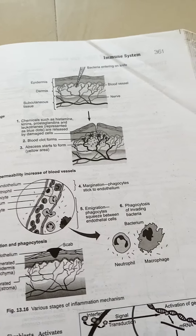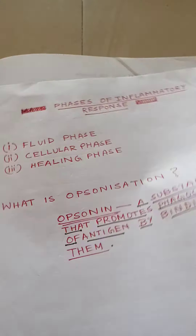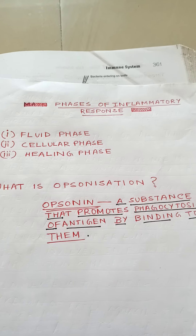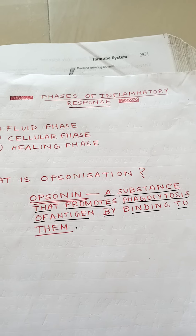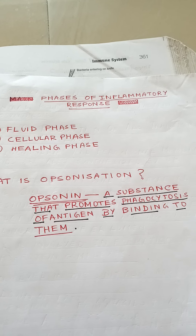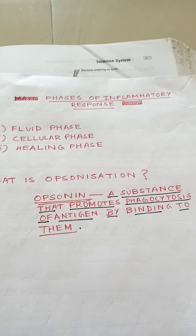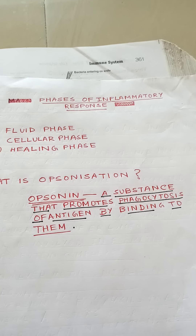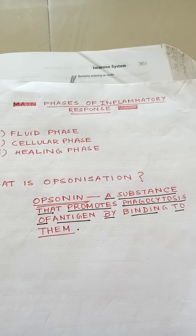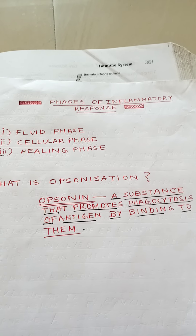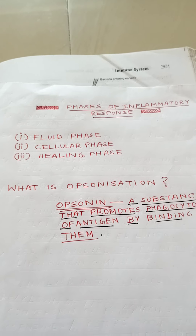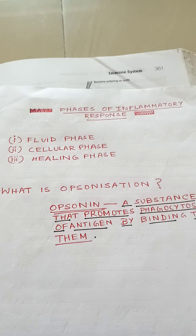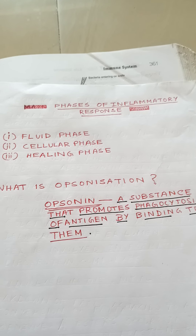Opsonization is the deposition of opsonins — a substance that promotes the phagocytosis of antigens by binding to them on an antigen, thereby promoting stable adhesive contact with appropriate phagocytic cells. C5A is chemotactic for neutrophils. The mast cells also secrete leukocytosis promotion factor, or LPF, which is chemotactic for neutrophils.